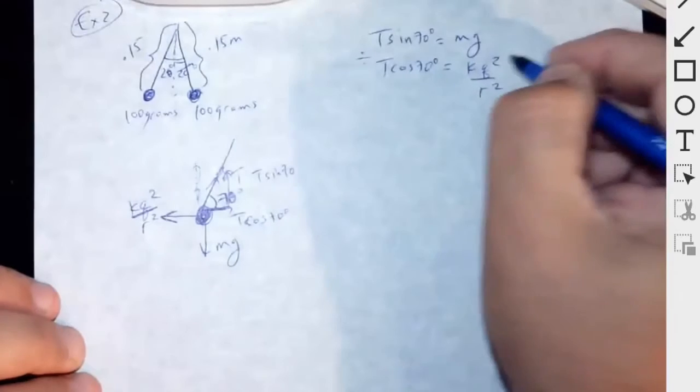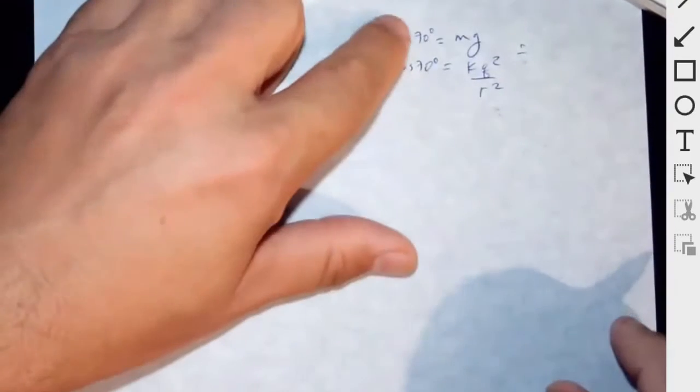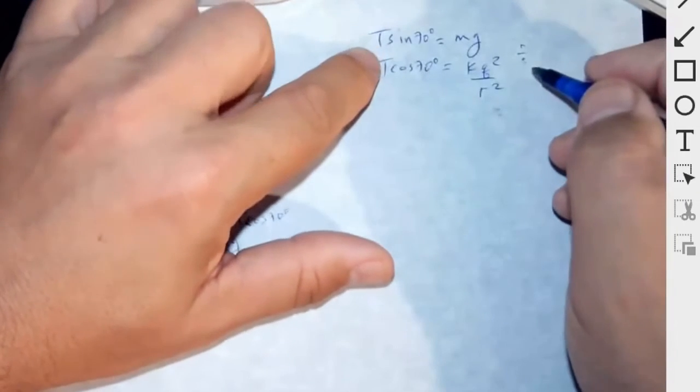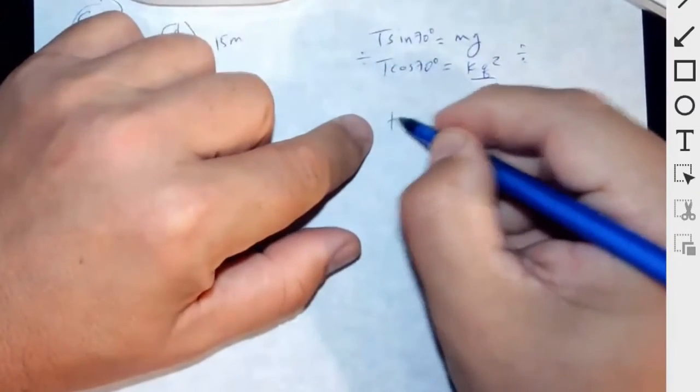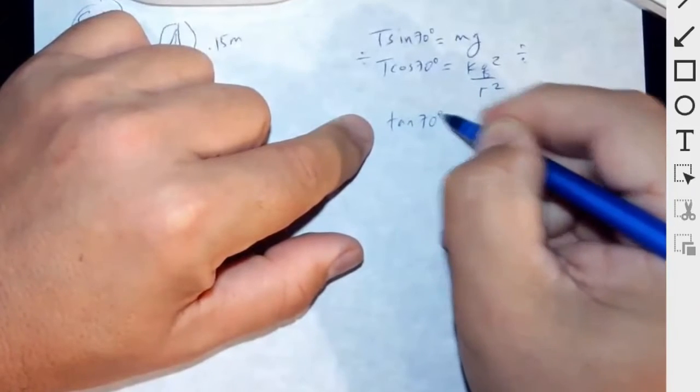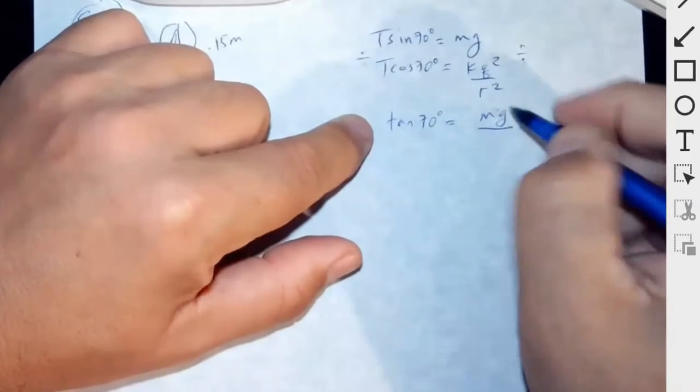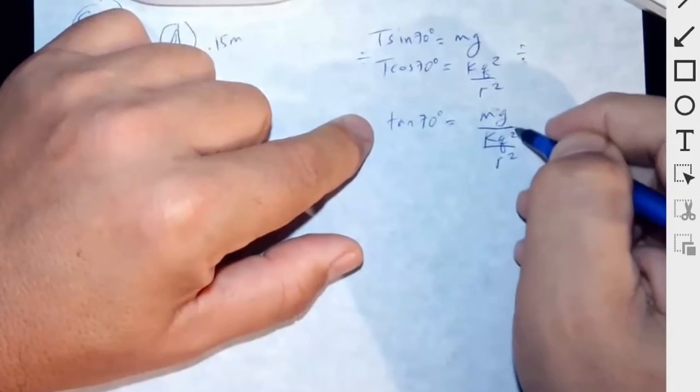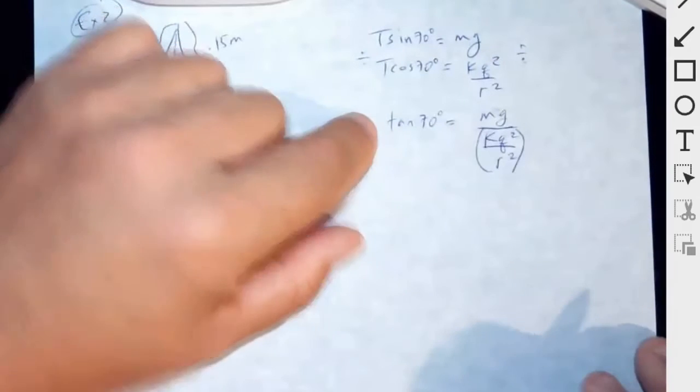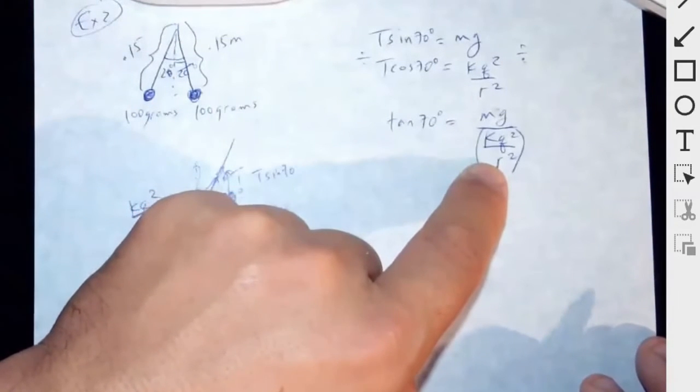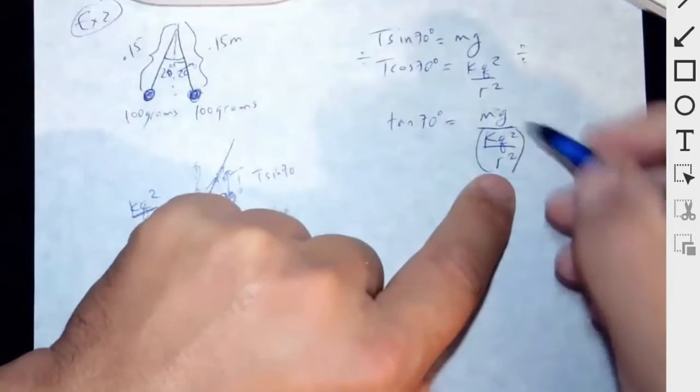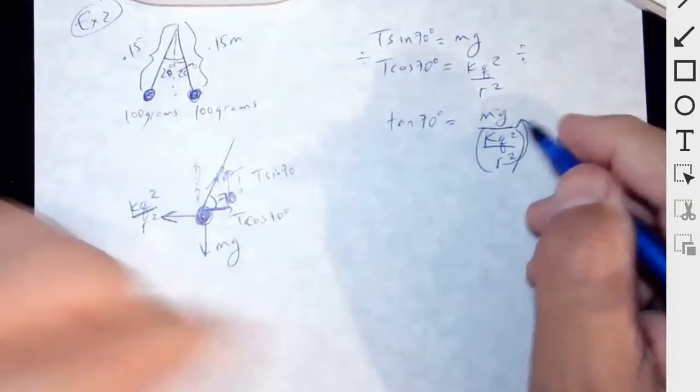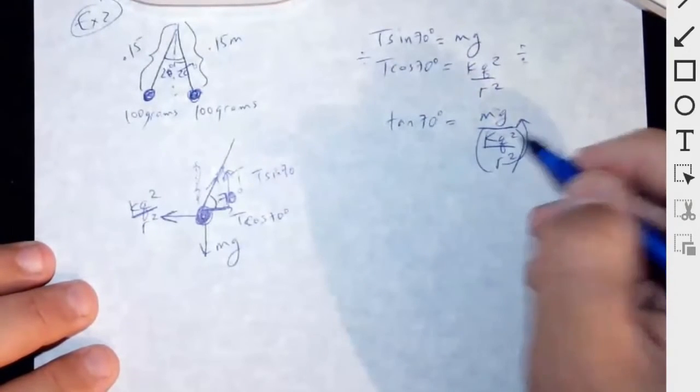You divide this to get rid of the tension in the string. So the T's cancel and then you get tangent of 70 is equal to Mg divided by KQ squared over R squared. And then I can bring the R squared to the top and what am I solving for? Q, right? So the Q can go up there and then the tangent can go down there.